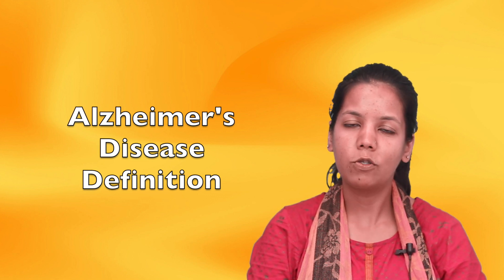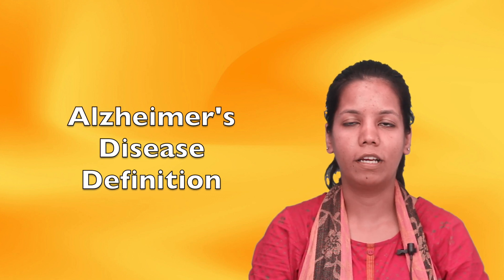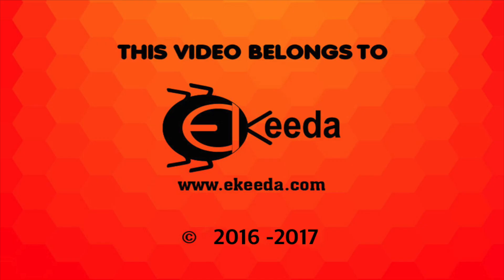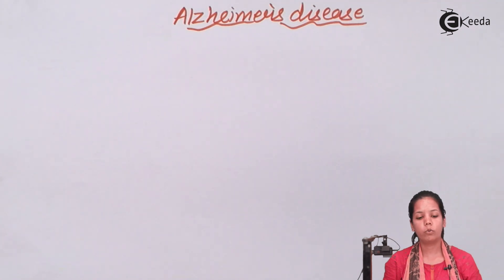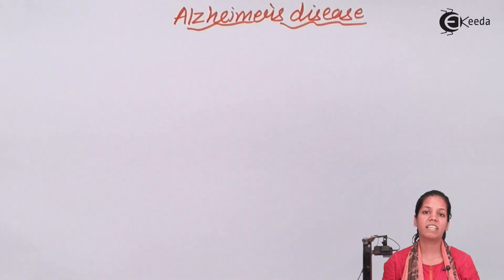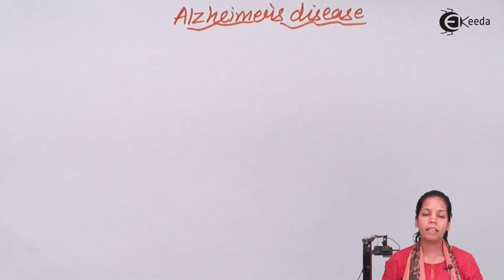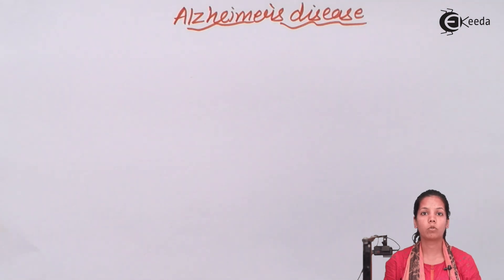Alzheimer's disease is caused due to reduction in production of acetylcholine. It is one of the diseases caused due to low amount or loss of the neurotransmitter acetylcholine, or ACH. Also, the destruction of a large number of neurons in certain parts of the brain leads to this. This is the disease that leads to loss of memory over the course of time.